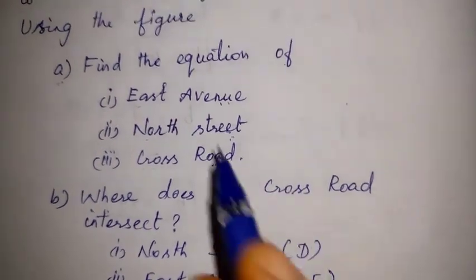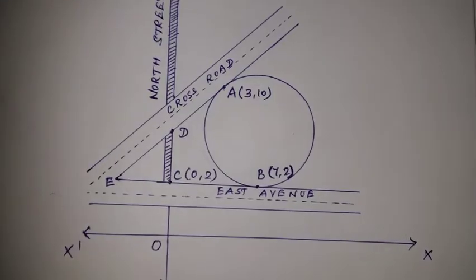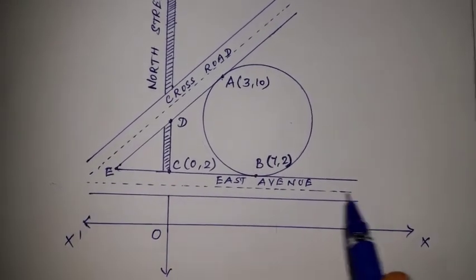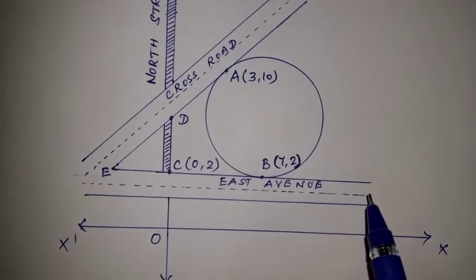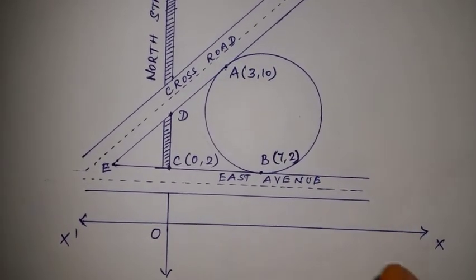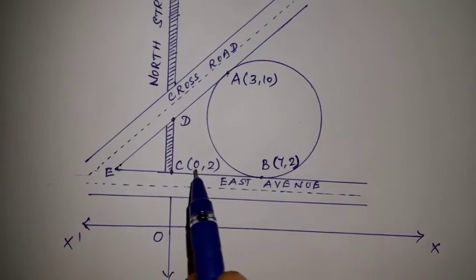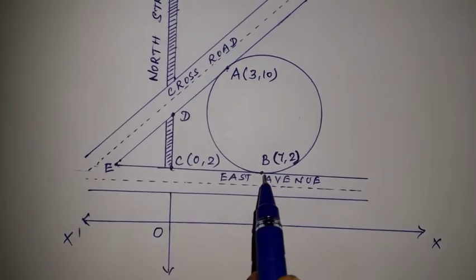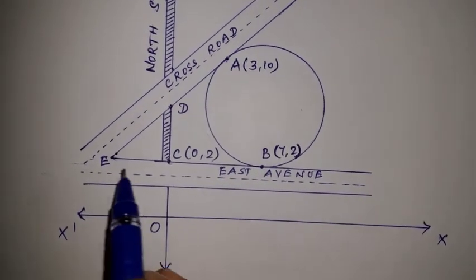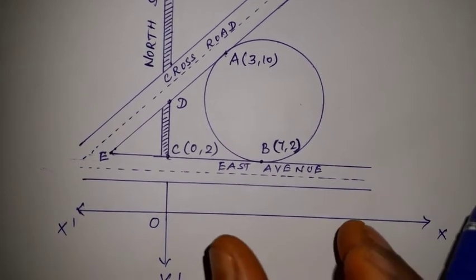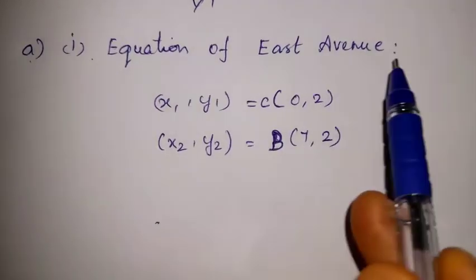Question A, Roman 1: Equation of East Avenue. East Avenue is a straight line (road). On this straight line, any two points can be used to find the equation. The two known points on East Avenue are C and B. So C and B lie on East Avenue, and we use these to find the equation.